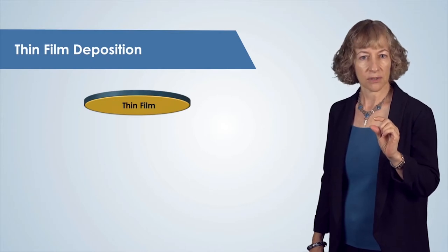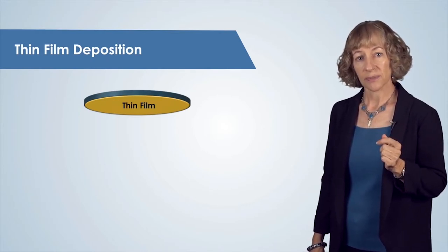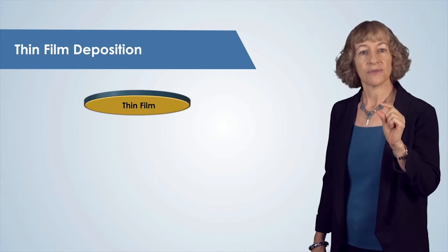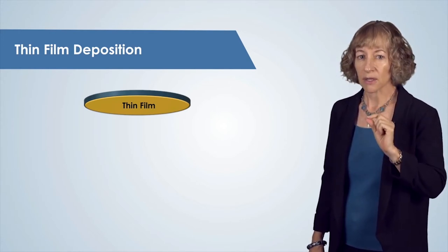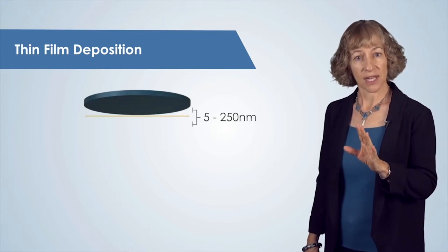We use vacuum systems to deposit thin layers of materials, such as metals and insulators, onto our substrates. The thicknesses of these vacuum deposited layers are very thin, on the order of 5 nanometers to 250 nanometers.